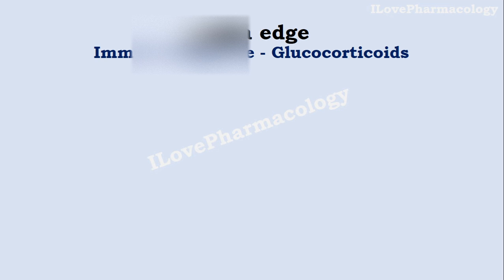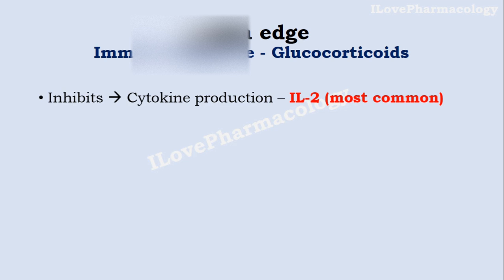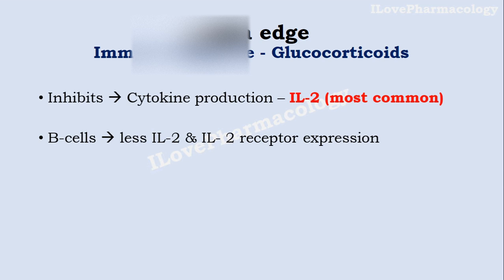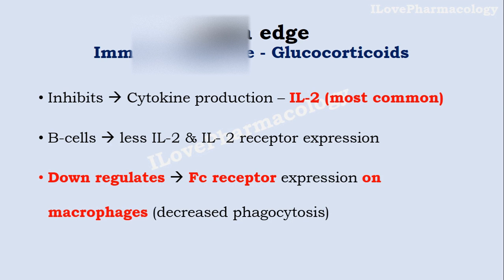Here is an extra edge point very important with respect to immune response. The most common cytokine production that is inhibited is interleukin-2. The decrease in B cell or humoral immunity occurs because there will be less expression of interleukin-2 as well as interleukin-2 receptors on B cells. With respect to phagocytosis activity, the reason for a decrease in phagocytic activity is down-regulation of Fc receptor expression on macrophages.